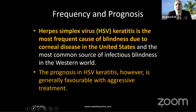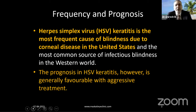Herpes simplex — HSV keratitis is the most frequent cause of blindness due to corneal disease in the US and the most common source of infectious blindness in the developed countries. Here of course we have fungus which takes the top podium. The prognosis in HSV keratitis however is generally favourable with aggressive treatment. So should we be treating everybody with antivirals?